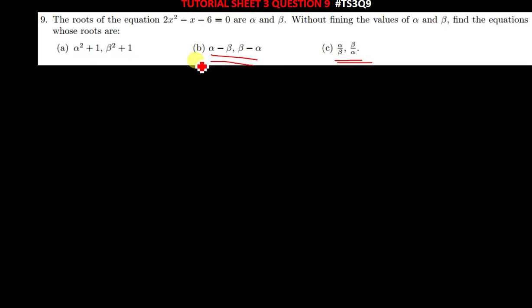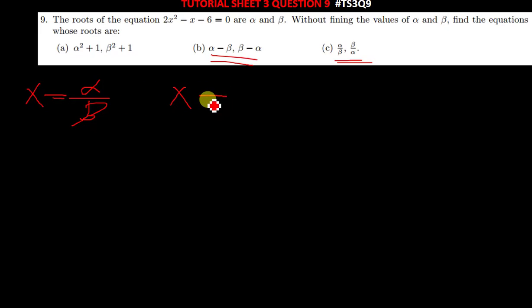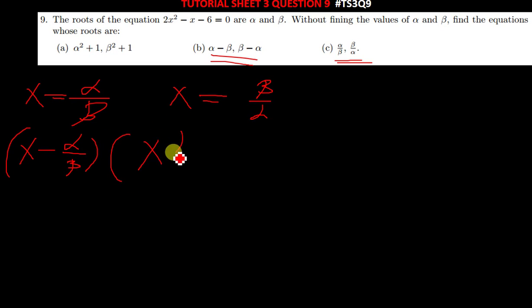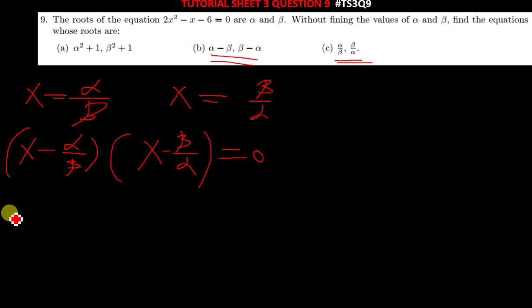Let me help you solve part c. Part c states that the first value of x equals α over β, and the other value is β over α. You put them in brackets in the form (x − α/β)(x − β/α) = 0.